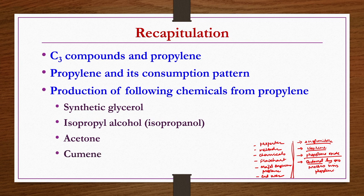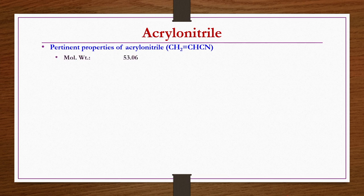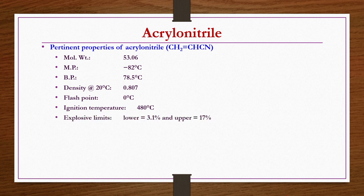Now we start today's lecture on production of acrylonitrile. We first discuss pertinent properties of acrylonitrile, which has the structure CH₂=CH-CN, molecular weight 53.06, melting point minus 82°C, boiling point 78.5°C, density at 20°C is 0.807 g/cc, flash point 0°C, ignition temperature 480°C, and explosive limits of 3.1% (lower) and 17% (upper).